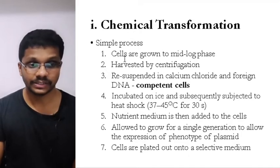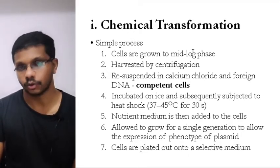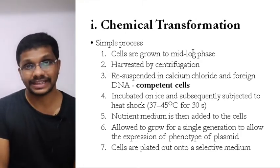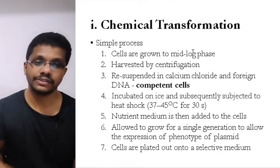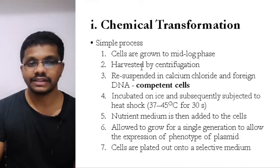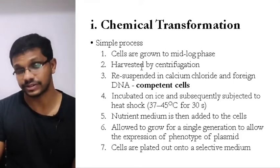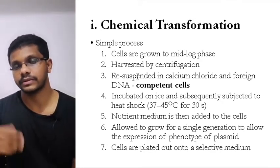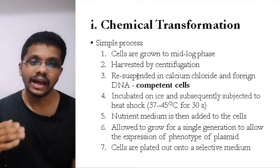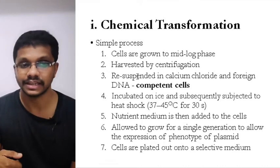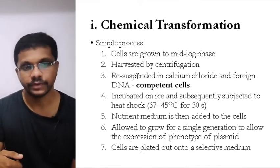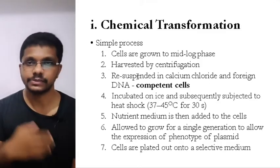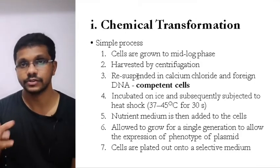In chemical transformation, the first step is that the cells are grown to mid-log phase. In the middle of the log phase, the bacteria have maximum competency for taking up DNA — that's why we grow to mid-log phase. After that, we harvest using centrifugation, using around 1,000 to 10,000 rpm for 10 minutes. We discard the supernatant and take the pellet, which is then resuspended in a medium containing calcium chloride and the foreign DNA. Once we add the calcium chloride, the calcium will form a complex with the DNA. Calcium is positively charged; DNA has phosphate groups, so it is negatively charged.